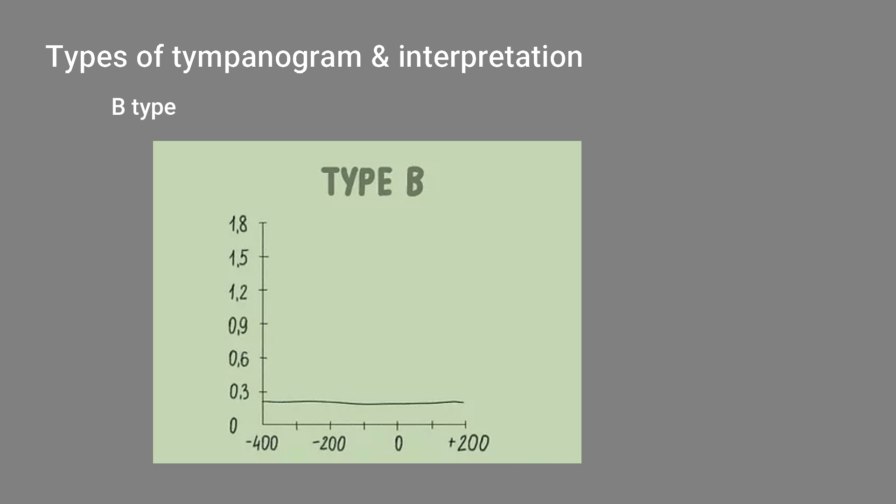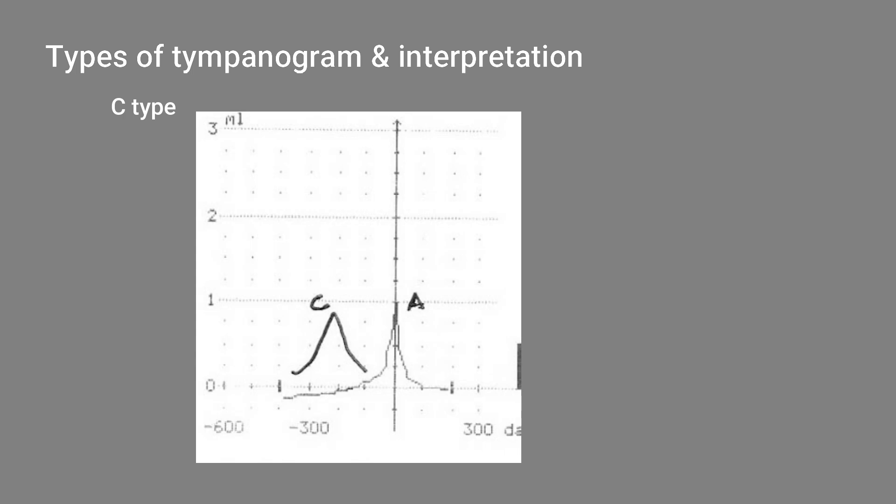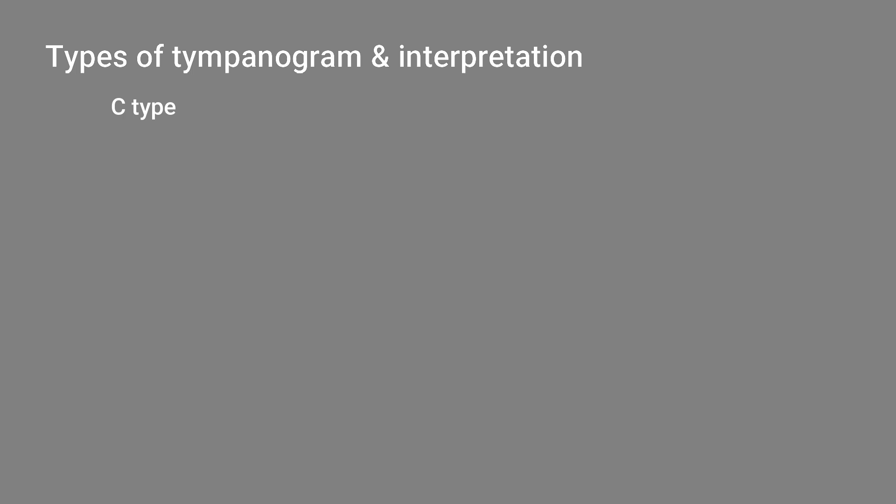If the tympanogram is flat or dome shaped, it is Type B, seen in middle ear fluid or thick tympanic membrane. Type C is similar to Type A but the peak occurs at a pressure more negative than minus 100 mmH₂O. The peak shape is normal but the pressure is more negative than minus 100 mmH₂O. It is seen in retracted tympanic membrane and may indicate eustachian tube obstruction or early otitis media with effusion.